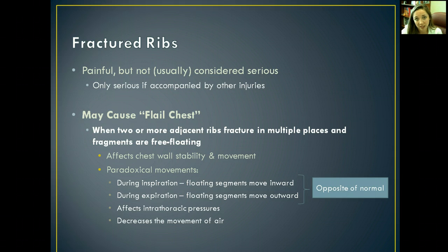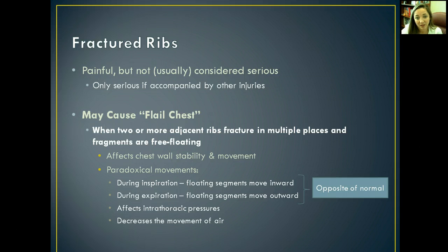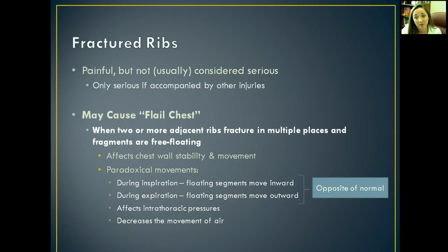It might cause flail chest, and this is a phenomenon that can happen when two or more adjacent ribs — meaning ribs that are next to each other — are fractured in multiple places. Then there are fragments that are just free-floating within the thoracic cavity. It affects the chest wall's stability because ribs provide good structure for our thoracic cavity, and free-floating fragments definitely affect that stability.